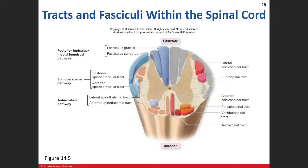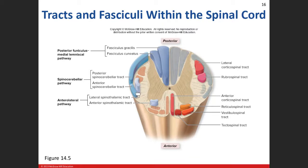In our posterior funiculus, we have bundling of axons on each side. The more medial fasciculi are called the fasciculus gracilis, and the more lateral ones are the fasciculus cuneatus — all sensory tracks. We have mixed tracks including the spinocerebellar pathway, and we haven't talked about the spinothalamic yet — we'll cover those in a moment. The anterior funiculus also has both sensory and motor tracks.